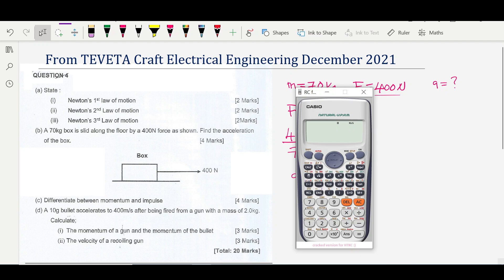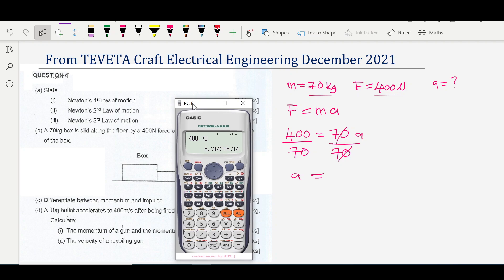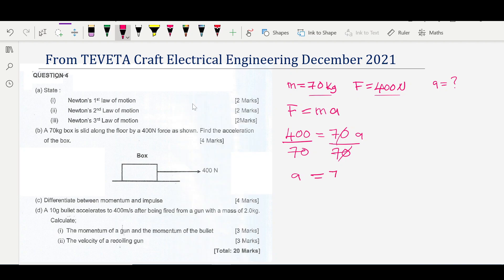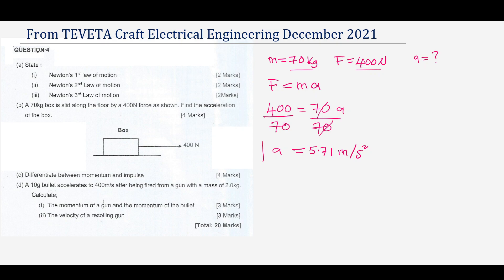Using a calculator, 400 divided by 70 gives us 5.71. So our acceleration is 5.71 meters per second squared. That is our acceleration for Part B.